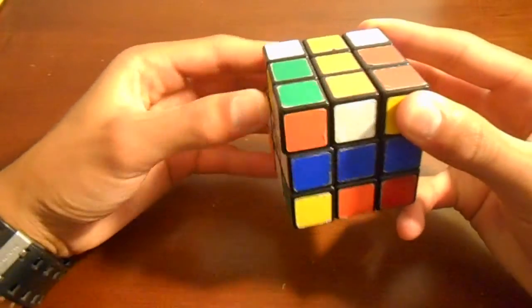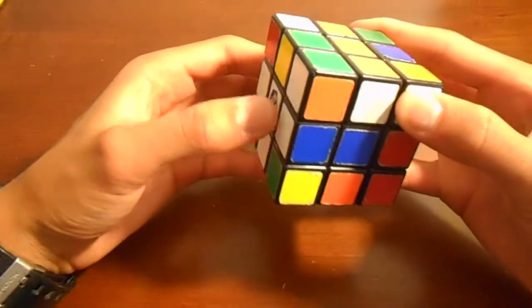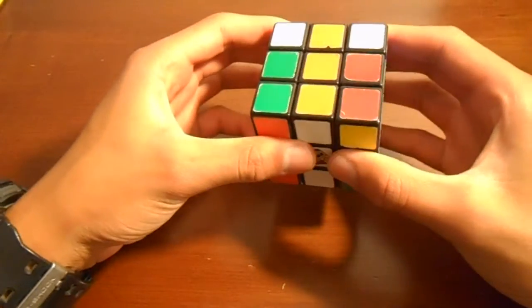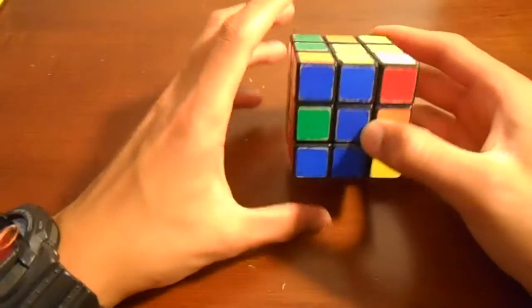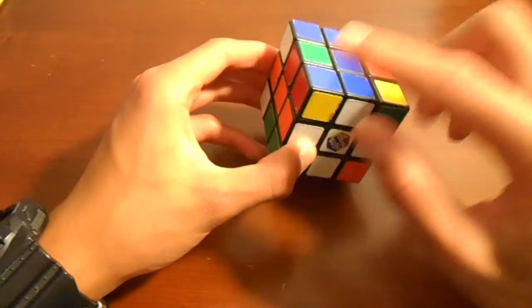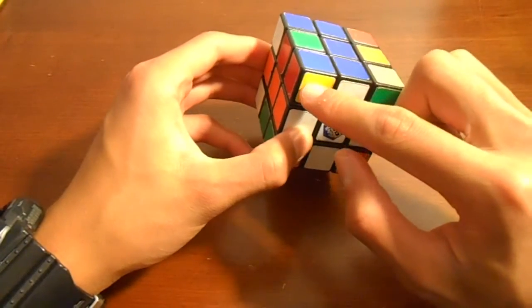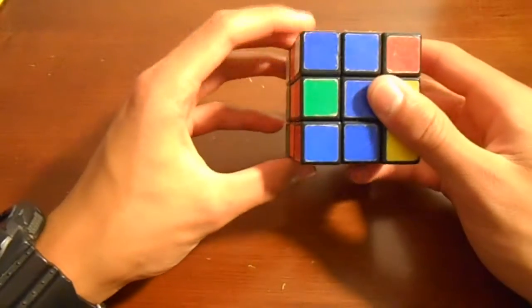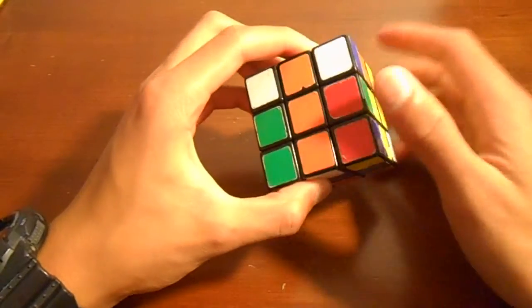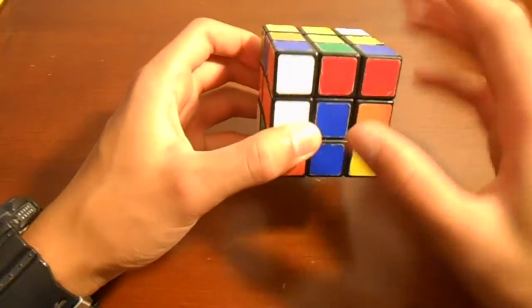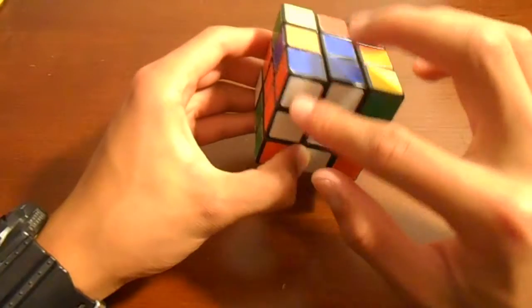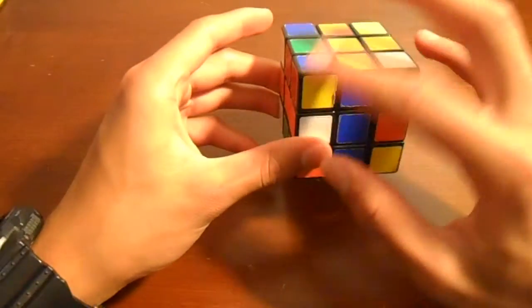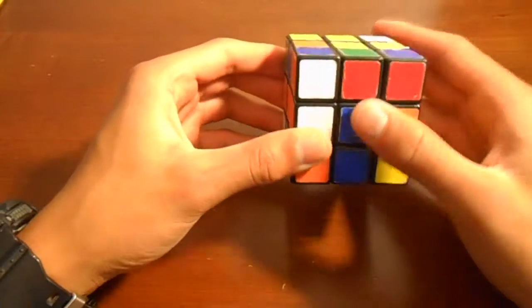Another way you can look at it is like this: you're bringing up this slot here and then inserting the corner. You're going to bring up the slot, then move the corner piece into that slot, and then put the slot back. So once again, bring up the slot, move the corner into the slot, and bring it back.